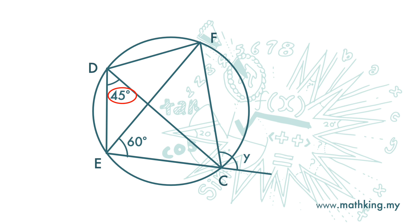Angle 45 degrees is an angle at circumference that is subtended by arc CE. Arc CE also subtends another angle at the circumference here. So the angle here is also 45 degrees.